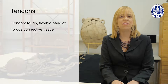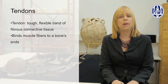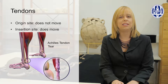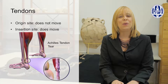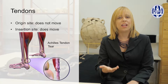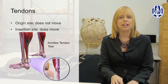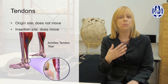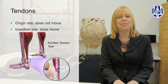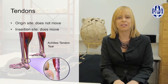A tendon is a tough, flexible band of fibrous connective tissue that binds muscle fibers to the bone's ends. Each muscle is labeled as having an origin and an insertion tendon site relative to the particular movement of the joint or body part in question. An easy way to think about this is that the origin site is the one that does not move, or at least moves very little, compared to the insertion site, which moves more when the muscle contracts.